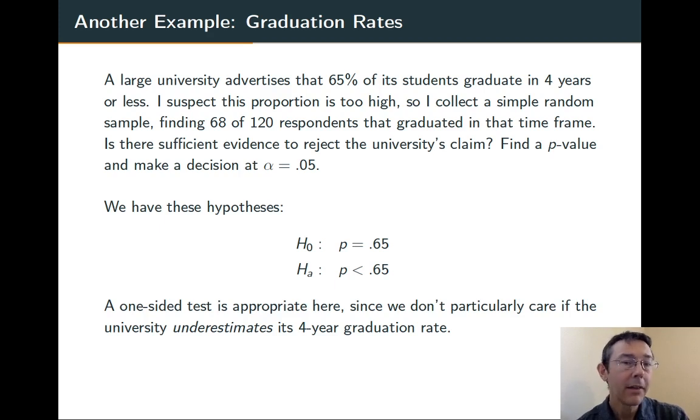The alternative hypothesis is that, in fact, the university is exaggerating their graduation rate, and that the population proportion really is less than 0.65.